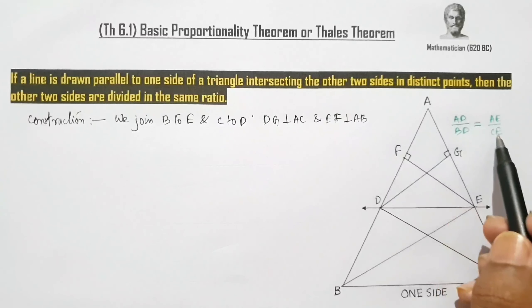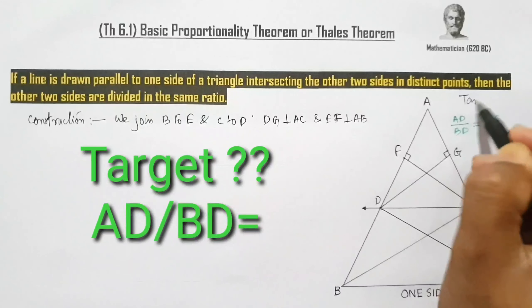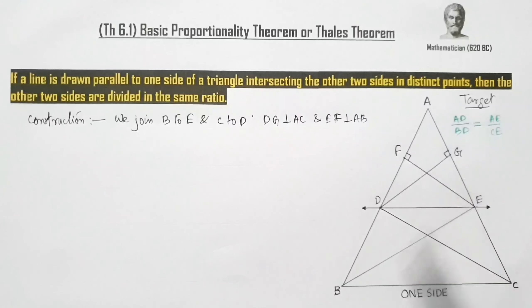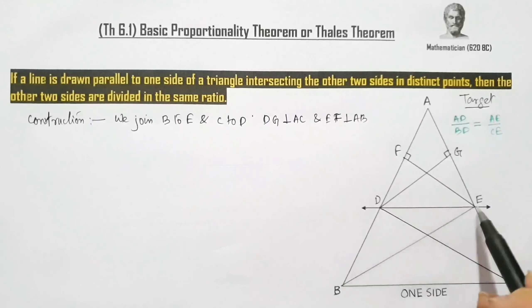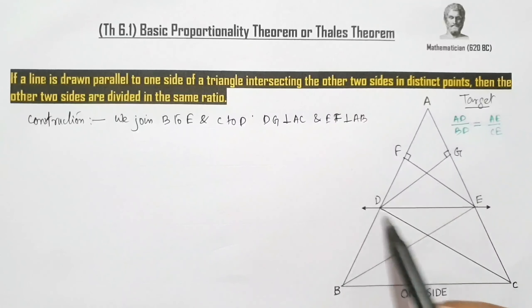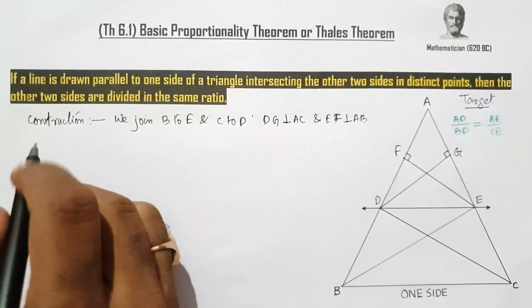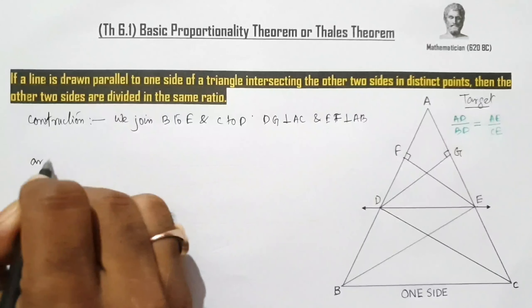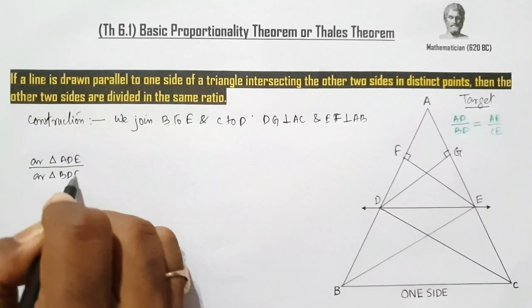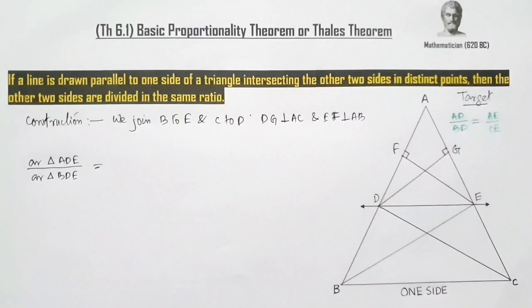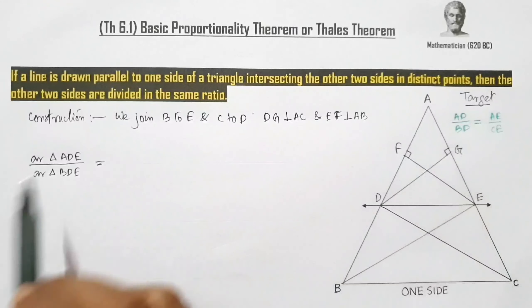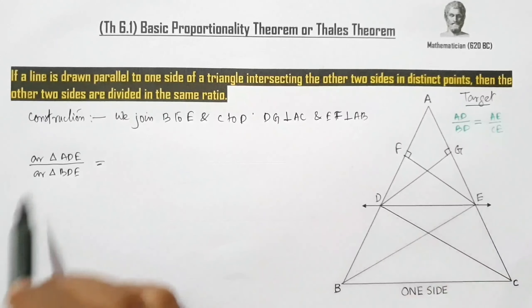Our target is to prove AD/BD = AE/CE. Now in the figure, AD is the base of triangle ADE and BD is the base of triangle BDE. To find the ratio AD/BD, we can take the ratio of area of triangle ADE to area of triangle BDE.